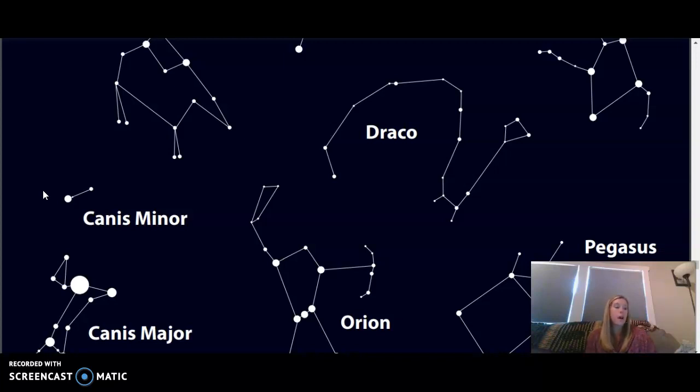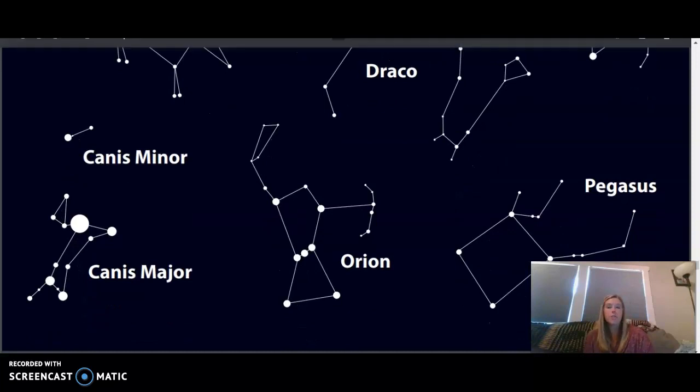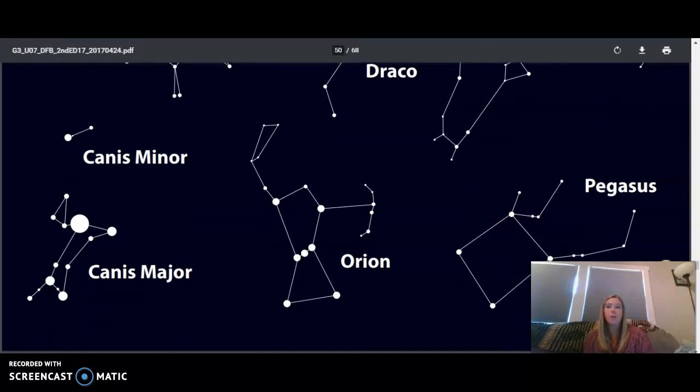If not, have some fun and make up some constellations and stories of your own. Maybe someday you'll cross the equator, travel to another part of the world, and experience the constellations of the night sky from another point of view. You may now move on to Unit 7, Lesson 8, Google Form.